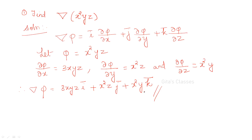Now let us do some problems. Find del of phi = x²yz. Del phi is defined as i times ∂φ/∂x. Sometimes they can ask: find the gradient of the function x²yz. So del phi equals i times ∂φ/∂x plus j times ∂φ/∂y plus k times ∂φ/∂z.